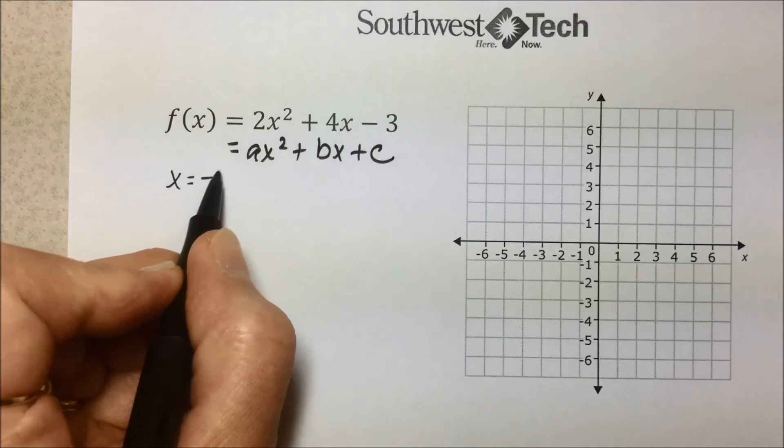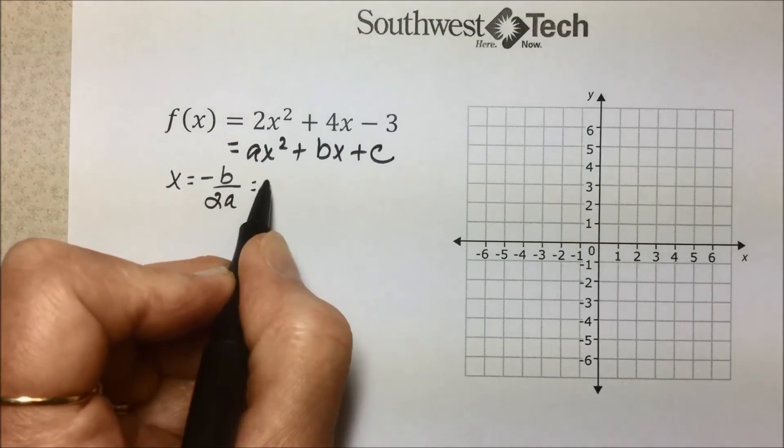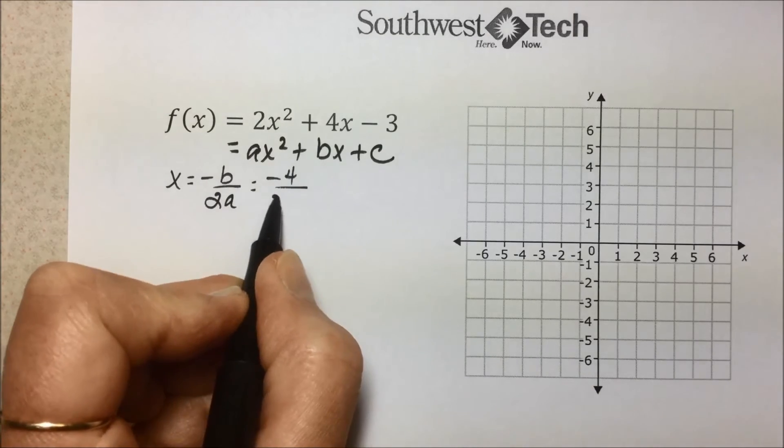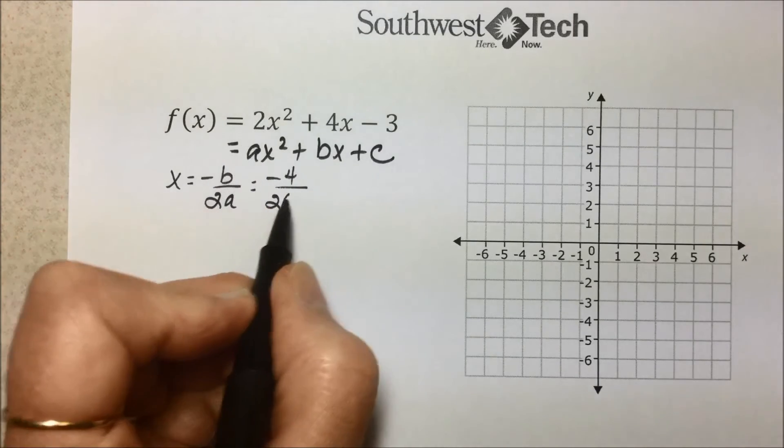We can find the x-coordinate of the vertex by taking the opposite of b, which is going to be -4 over 2 times a, which is a 2.